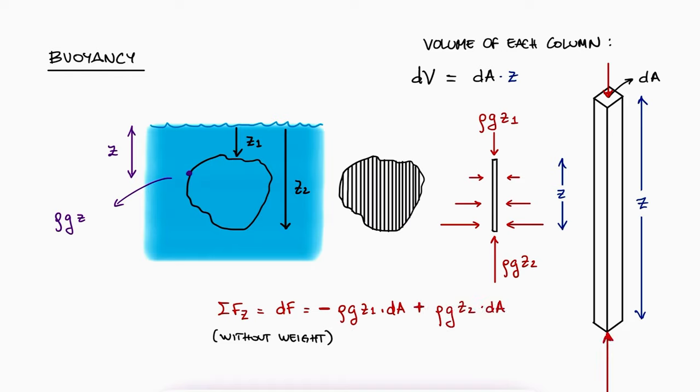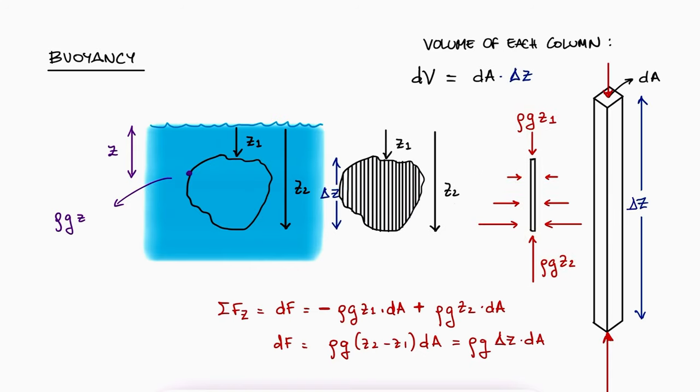And by the way, we only want the forces due to the pressure because that's what we're going to call buoyancy forces. Those are completely separate from the weight of our object. Rearranging this expression, we see that the magnitude of the force is equal to rho g times delta z times dA. And since the volume of that little column is exactly that, a dA times delta z, we can write this term as a delta volume dV.